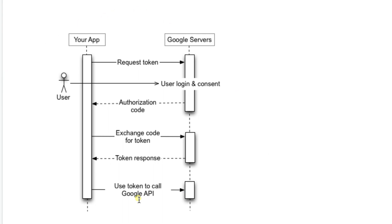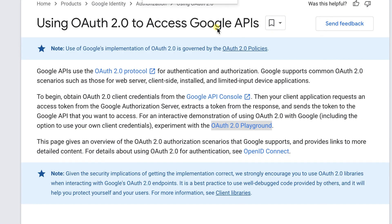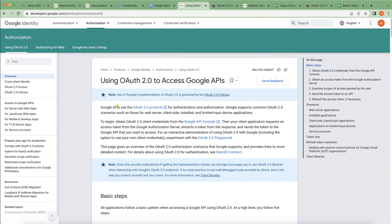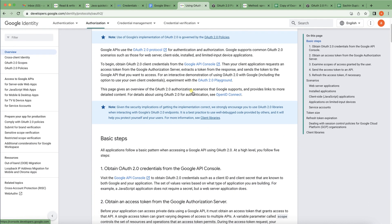There are a couple of flows. One common flow you've seen on many websites is when you try to log in, it says you can authenticate with Google. When you click it, a pop-up opens where you select your email ID. Those processes happen in the backend, generating an access token, and then you are able to log in to that website. You can use OAuth 2.0 to access Google APIs. All the information is captured in the documentation link, which I'll add to the video description.